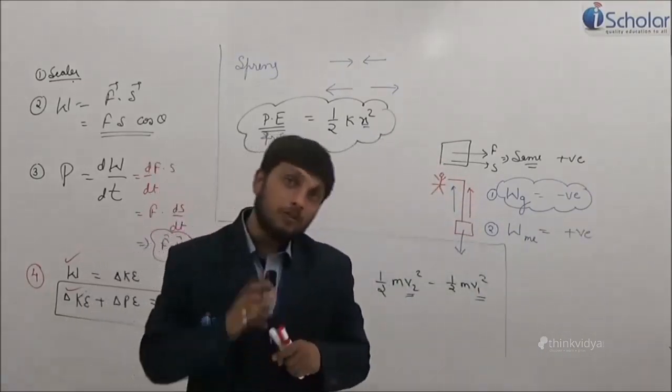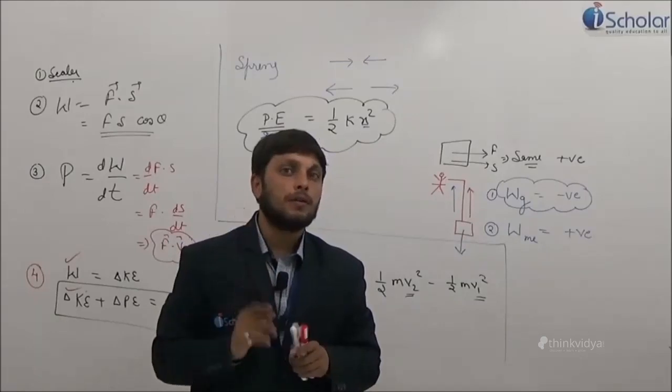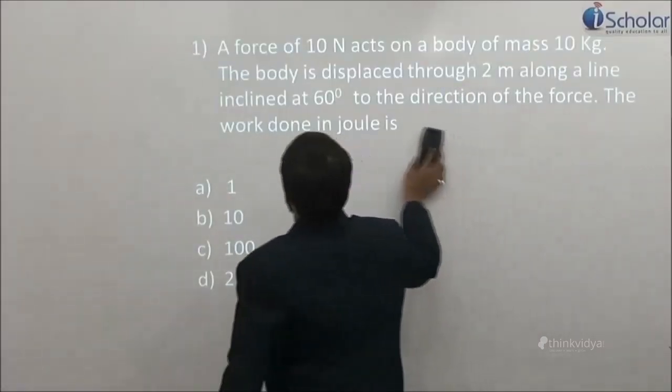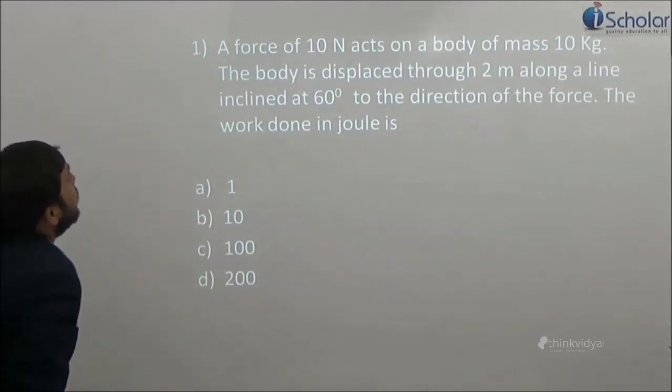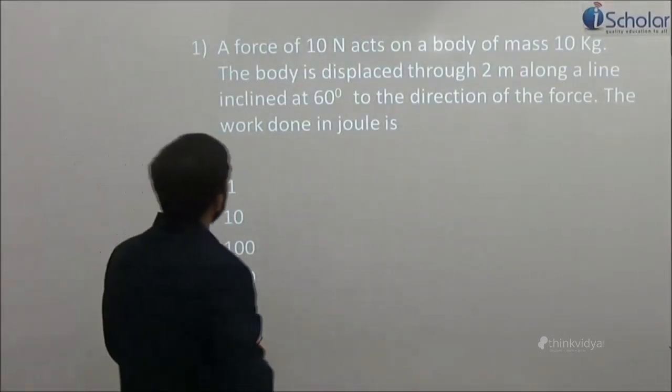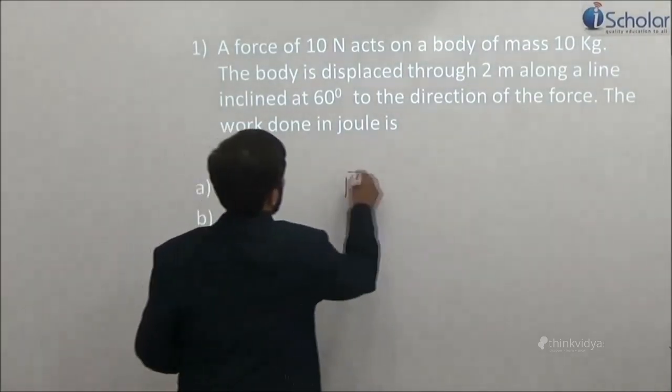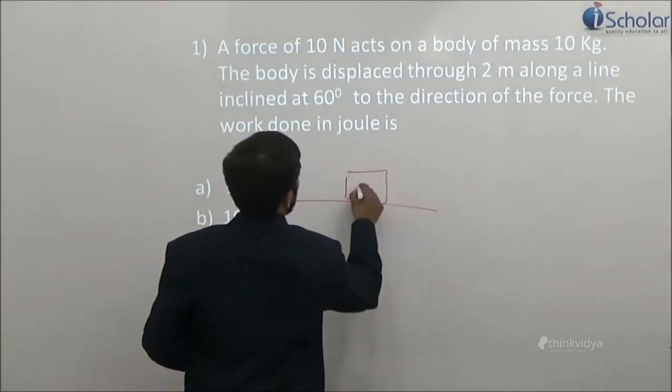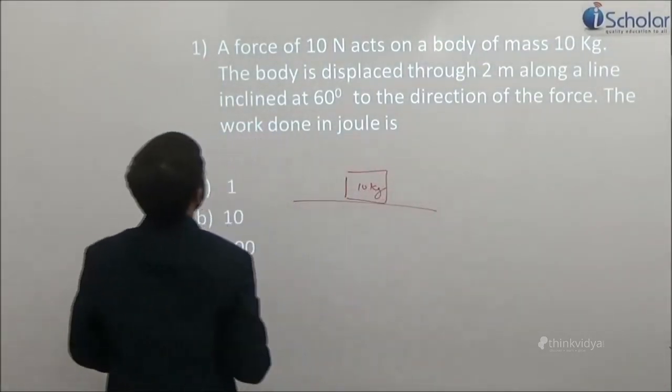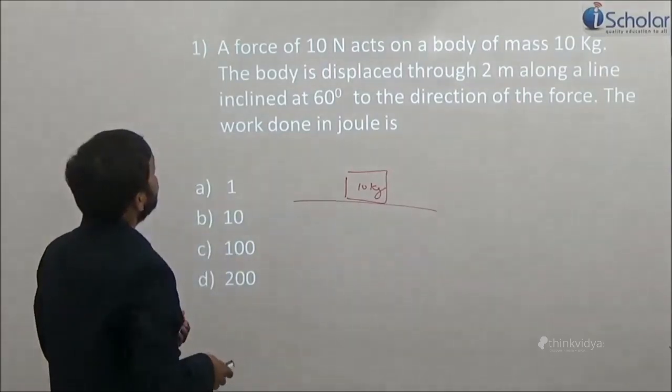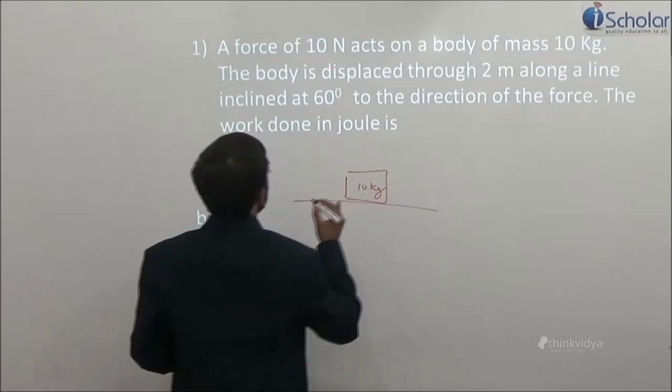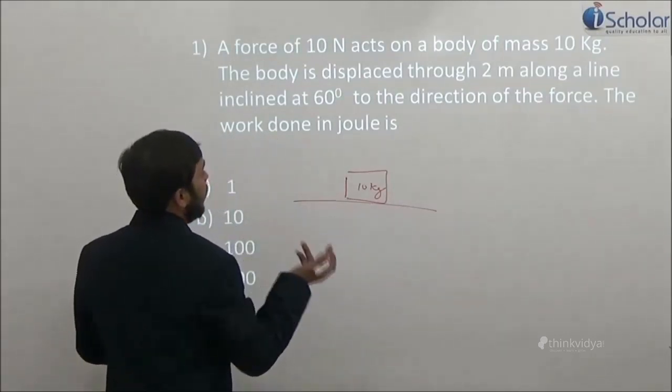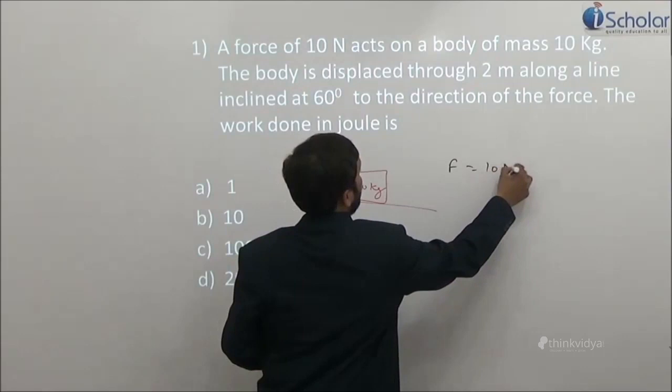This will clear you the whole concept. So question number 1 appeared. A force of 10 Newton acts on a body of mass 10 kg. The body is displaced through 2 meter along a line inclined at 60 degree.